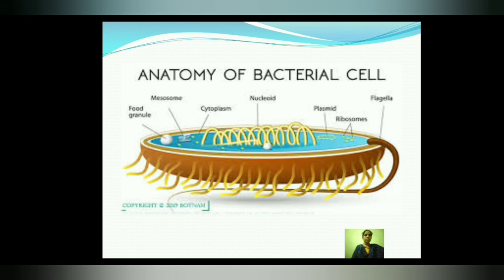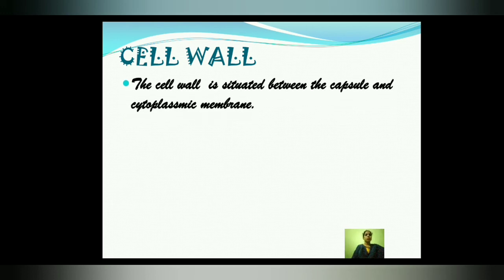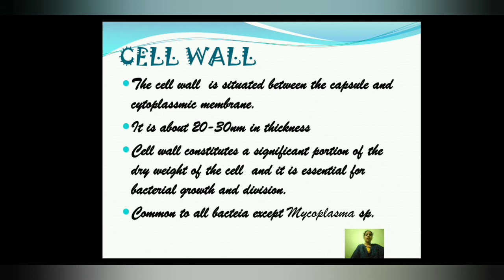The cell wall is situated between the capsule and the cytoplasmic membrane. It is about 20 to 30 nanometers in thickness. The cell wall constitutes a significant portion of the dry weight of the cell and is essential for bacterial growth and division. The cell wall is common to all bacteria except some species — for example, Mycoplasma, which is a cell wall-deficient bacteria.